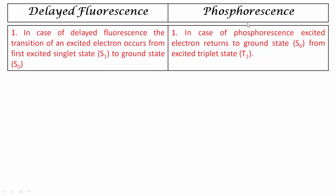In case of phosphorescence, the excited electron returns to the ground state S0 from the excited triplet state. When the molecule or excited electron returns to the ground state by emitting light radiation from the triplet excited state, those radiations are called phosphorescence.